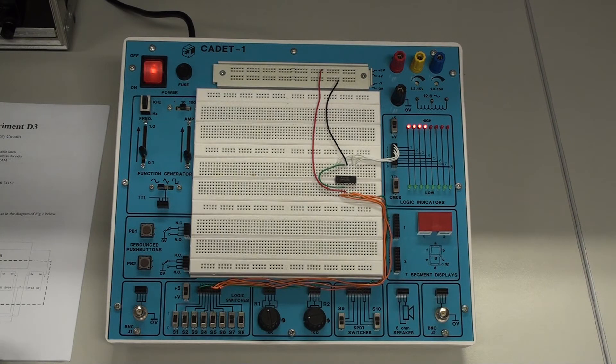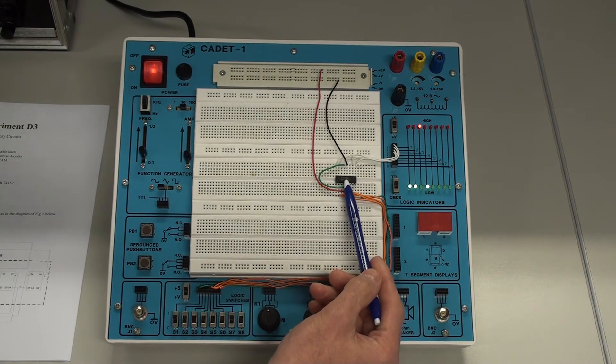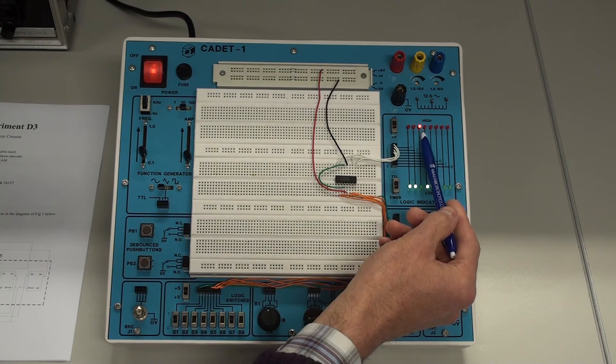Okay, so you could say we're in the read mode. If we change the enable line then to high, we are now writing the information on these four switches here to the latch. And we can see the output on the LEDs.